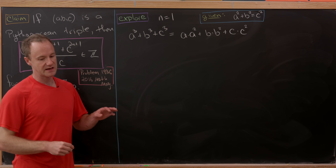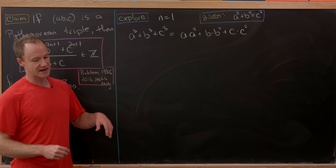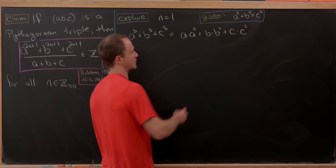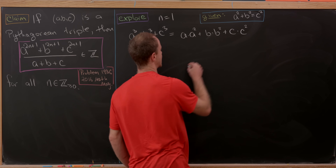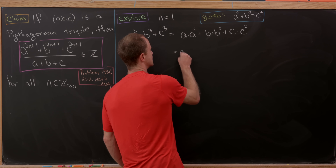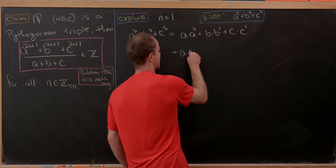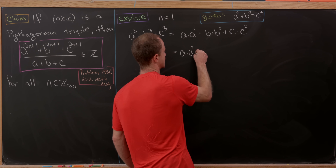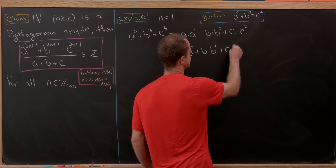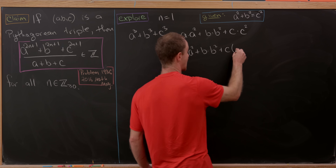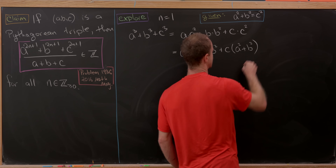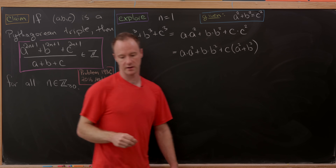Next, we take that c squared and write it as a squared plus b squared, since we have a Pythagorean triple. So we'll have a times a squared plus b times b squared plus c times (a squared plus b squared).